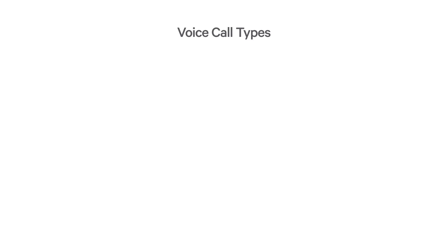This video looks at the typical voice call types on a P25 network. A group call is a call from one person to a group of people and is typically the primary method of voice communication on a P25 trunk system. The call starts when the PTT is pressed, and a traffic channel is allocated for the call and the first transmission is made.